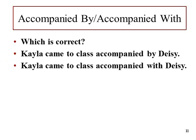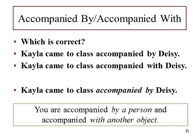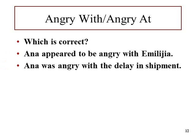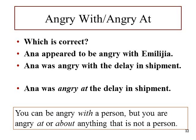Angry with and angry at — you want to be angry with a person, but angry at something that is not a person. That's why Anna appeared to be angry with Amelia, but Anna was angry at the delay in shipment. For parting from and parting with: you part from a person but you part with something that is not a person. So when we part from Mary, we'll go home, but we can part with our old things. That handy list in your book will really help you through these.